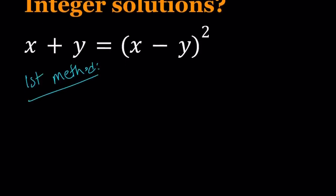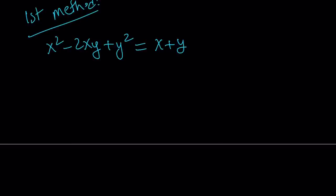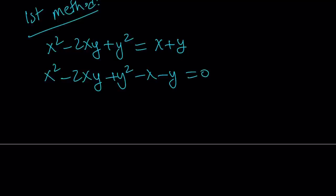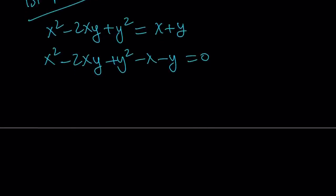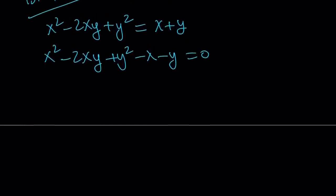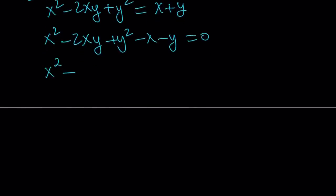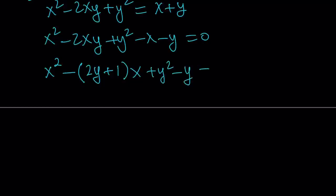For our first method, I'm going to go ahead and square what's on the right-hand side and set it equal to x plus y. Now I want to put everything on the same side — let's subtract x plus y. I want to turn this into a quadratic equation. We can do it in two different ways because of the symmetry; x and y are completely interchangeable. I'm going to write it as a quadratic in x, so the coefficient of x is negative 2y minus 1, and since we're solving as a quadratic in x, y is considered a constant. Now we can use the quadratic formula.